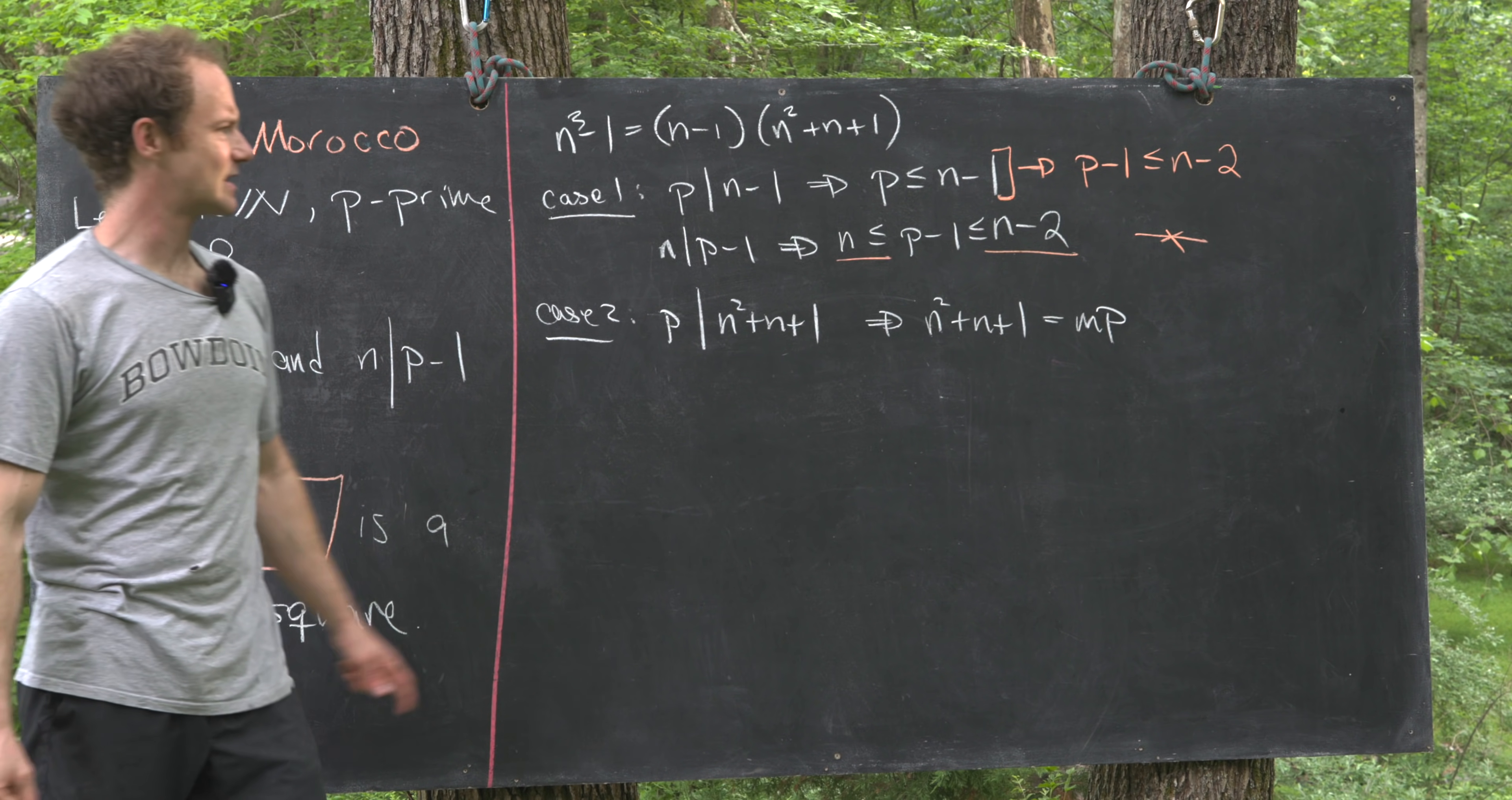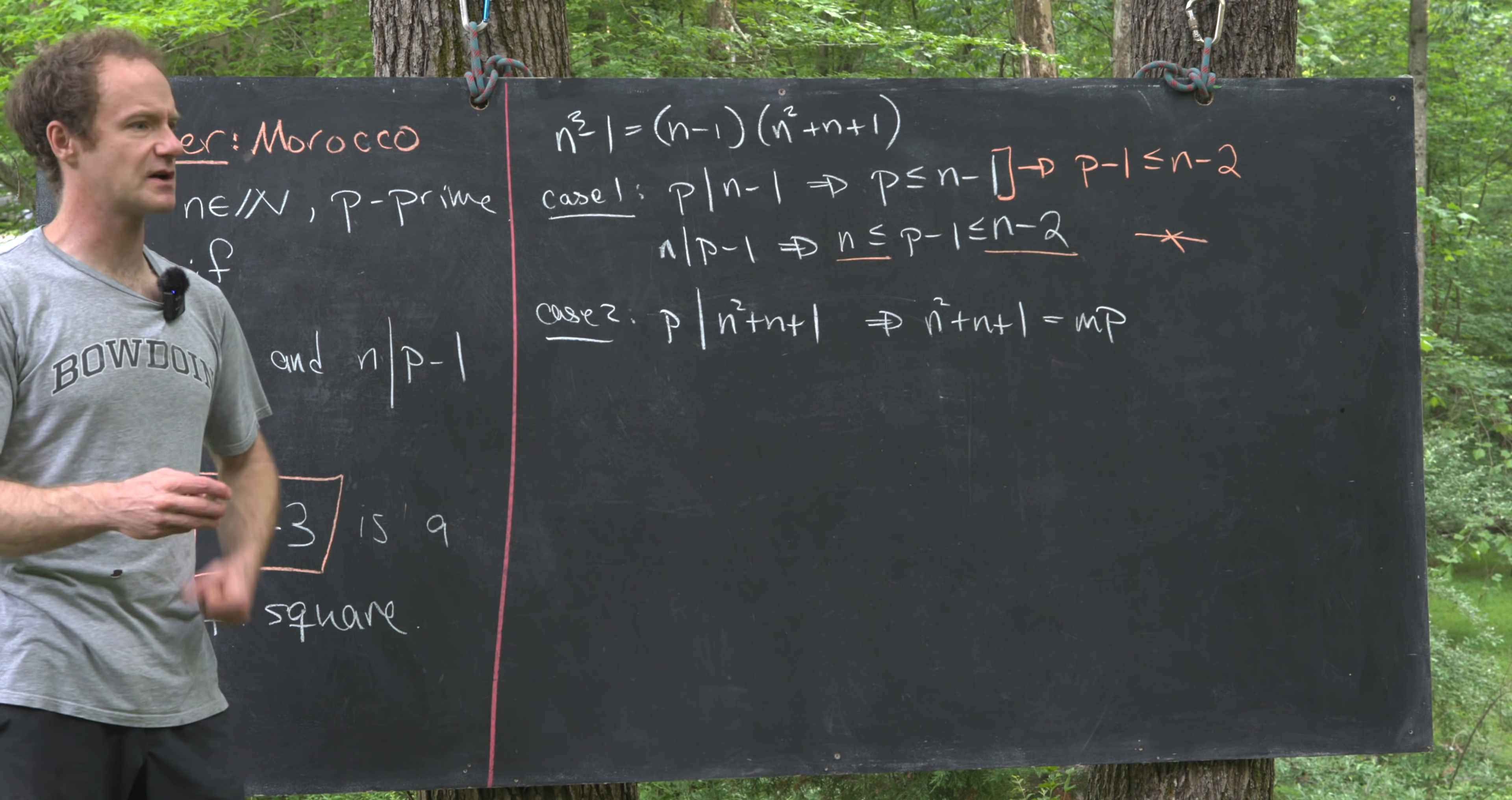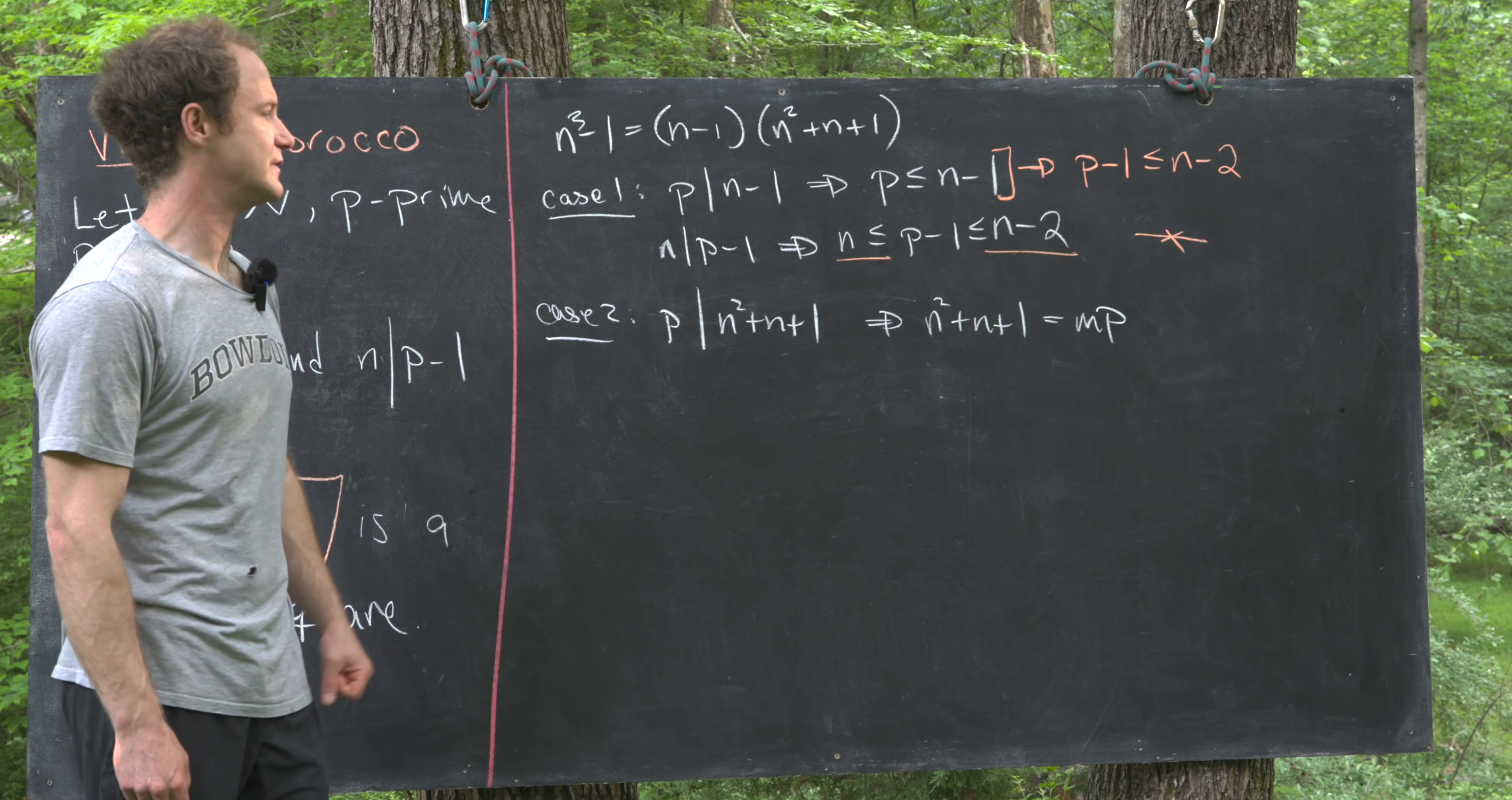And then we want to complete the square of this left-hand side, but we want to complete the square so that we stay within the integers. We don't want to complete the square inside the rational numbers, and that's because we're working inside of this integer setup. So how can we do that?